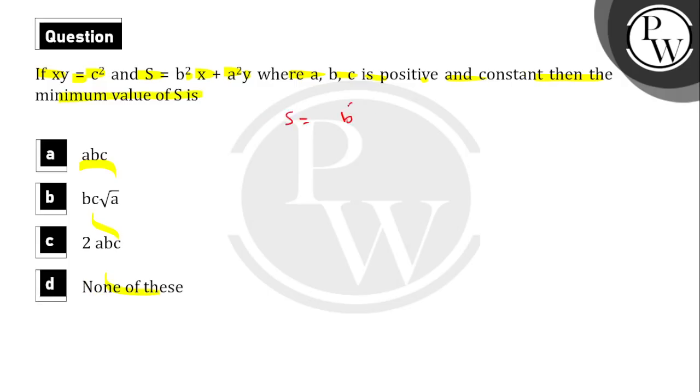In the question, what is given? s is equal to b square x plus a square y. So first we have to put the value of y in here.